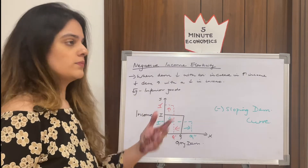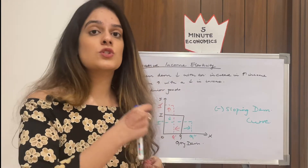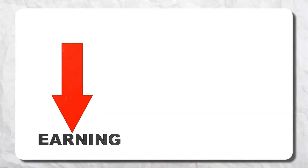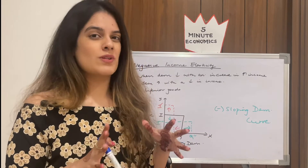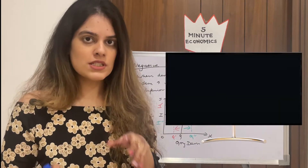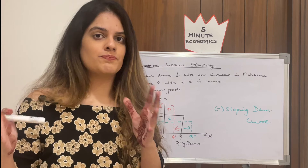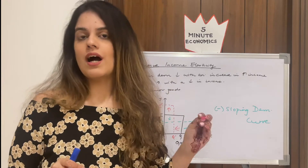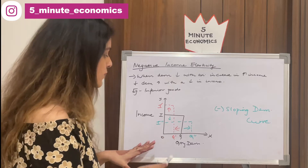In the case of inferior goods, income and demand work in opposite directions. For example, if we are earning less, we might be watching a black and white television. When income increases, we switch to a color TV, so the demand for the black and white TV falls. That black and white TV is the inferior good in this scenario.